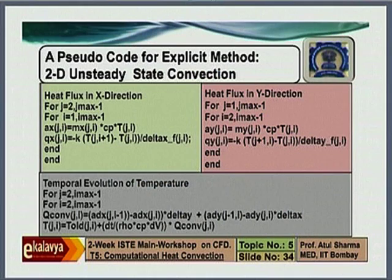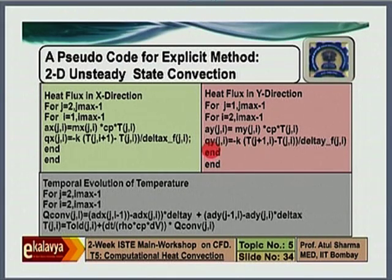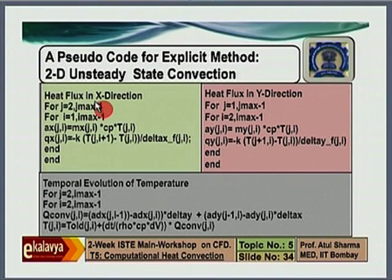Good evening. My question is about topic number 5, slide number 34 — that is in the pseudo code. The second line is for j equal to 2 to j_max minus 1, and for i equal to 1 to i_max minus 1 in the heat flux in the x direction. My question is: why are we not calculating heat flux at i_max? We are doing until i_max minus 1 only — why are we not calculating at i_max? In the pseudo code, the maximum value in the loop is always j_max minus 1 and i_max minus 1 for heat flux in x and y directions. Why are we not having the i_max, j_max value?